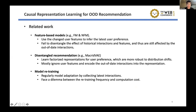Existing work with the potential to solve this problem can be divided into three parts. The first is feature-based models, which use user features to infer user preference. The second uses disentangled representations to learn robust representations, but these methods still suffer from the effect of outdated interactions — they cannot disentangle the effect of outdated interactions from latent user features. Another solution is model retraining, which regularly retrains the model to update user preference using the latest interactions after a feature change. However, this method faces a dilemma between retraining frequency and computation cost.